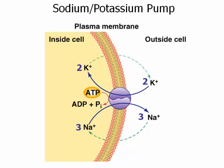The sodium-potassium pump moves three sodium ions out of the cell and two potassium ions in, requiring one ATP — as covered in lab.